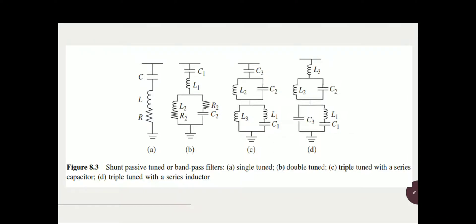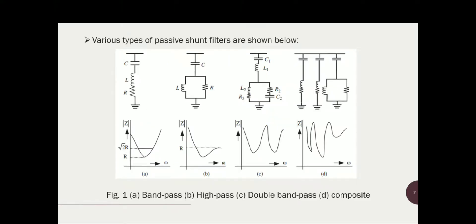Here is a pictorial representation of shunt tuned passive power filters. The first type (a) is a single-tuned passive power filter, (b) is a double-tuned passive power filter, (c) is a triple-tuned with a series capacitor, and (d) is a triple-tuned with a series inductor. These filters are most widely used for elimination of current harmonics and for reactive power compensation, mainly used at the load end since current harmonics are injected by nonlinear loads.